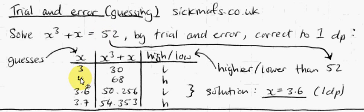So I guess 4, x equals 4. So 4 cubed plus 4 is 68. Oh, that's a bit too high, isn't it? That's higher than 52.